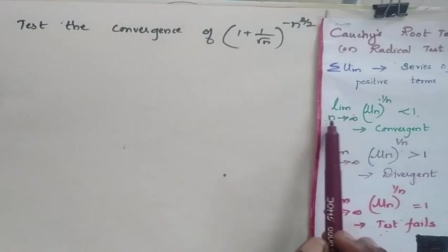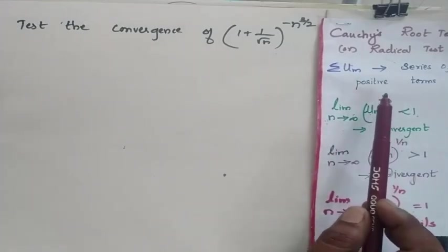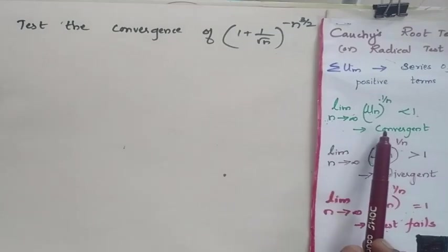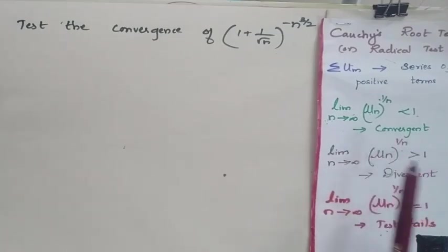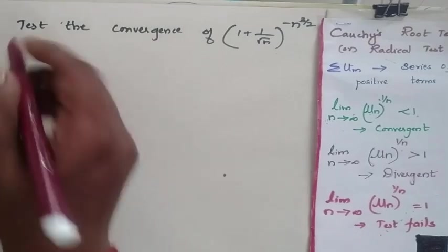You are going to find limit n tending to infinity of u_n to the power 1/n. When this is less than 1, it is convergent. When it is greater than 1, it is divergent, and when it is equal to 1, the test fails.